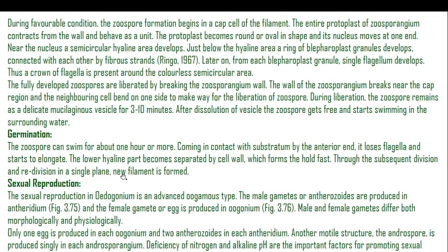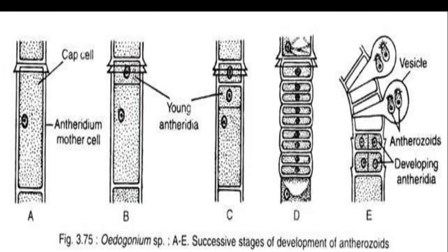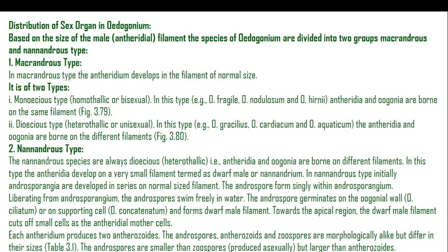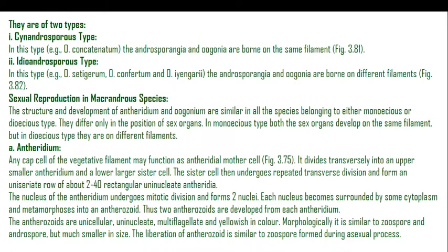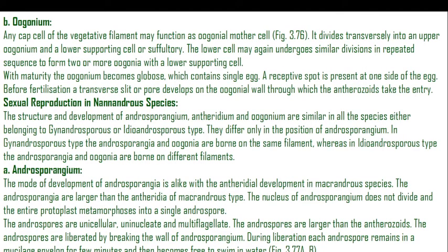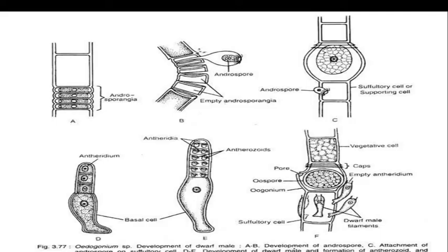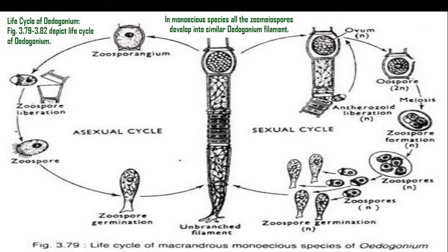In this way asexual reproduction takes place in Oedogonium. We are going to stop here and continue with sexual reproduction in the next lecture. You should read the diagrams and descriptions of sexual reproduction carefully before the next session.